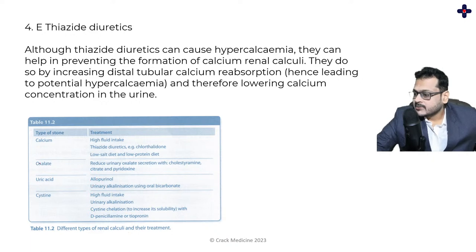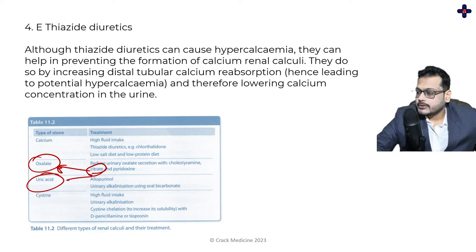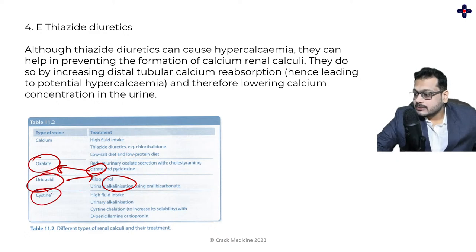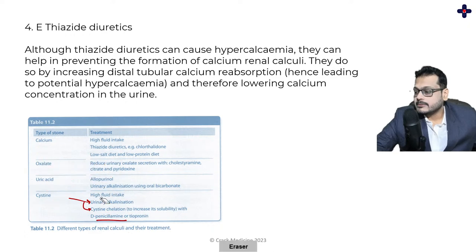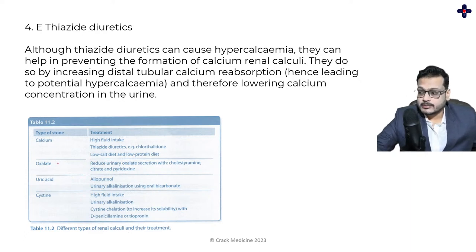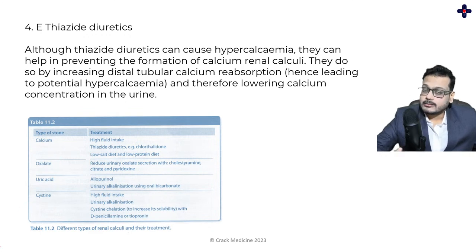For oxalate stones, you can reduce oxalate secretion with citrate. For uric acid stones, allopurinol helps, and urinary alkalisation also helps — oral alkalising syrups or oral bicarbonate tablets. For cystine stones, the same formula but using penicillamine. These are the various treatments for different types of renal calculi. You need to be very thorough with this because you can definitely expect a question surrounding renal calculi and their respective treatment.